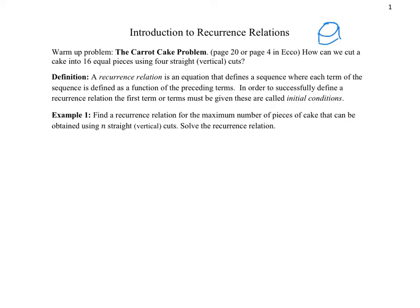Try to think of how you can do that — we're going to use this problem to introduce recurrence relations. So what is a recurrence relation? It's an equation that defines a sequence. A sequence is just a list of numbers in a particular order where each term, each number in the sequence, is defined as a function of the ones that came before it.